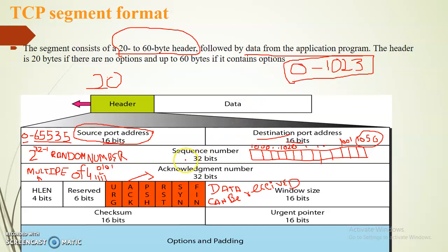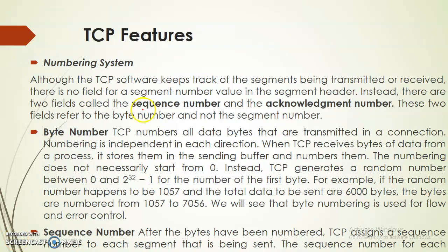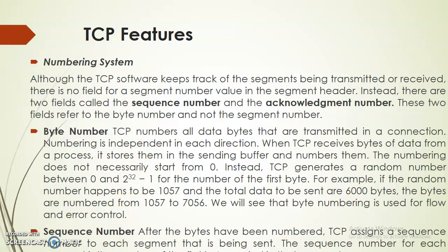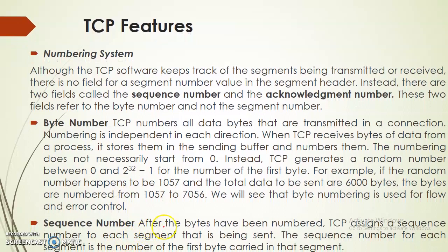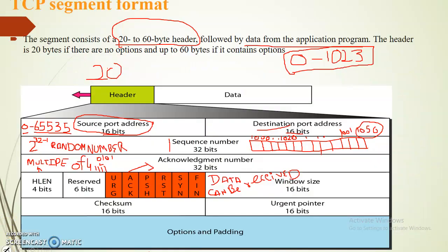Next we talk about the sequence number — we already talked about the sequence number in the last lecture. No sequence number is given to the segment itself; we already discussed that all bytes in the TCP packet are numbered. The sequence number is also a byte number — specifically the first byte number carried in the segment. That we have already discussed in the previous lecture.